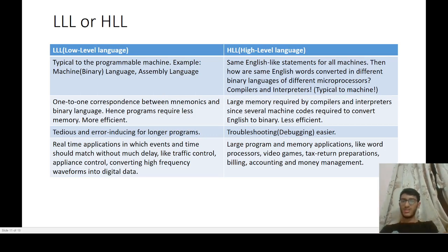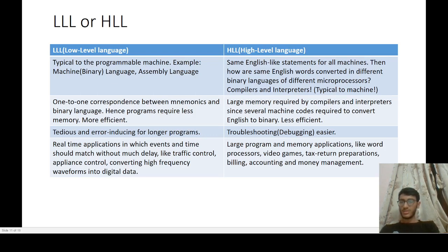The important question arises: what is the criteria for using a programming language — whether it should be low-level or high-level? Low-level languages are typical to the programmable machine; examples are machine language, binary language, or assembly language. A different microprocessor would have a different binary language.